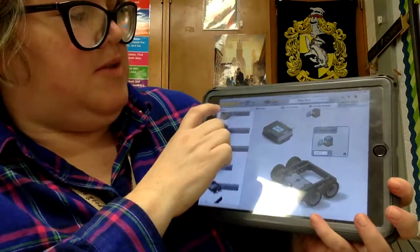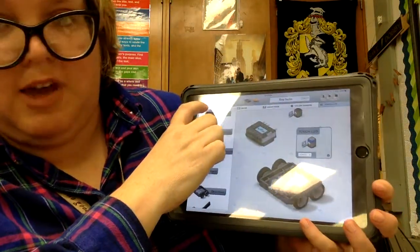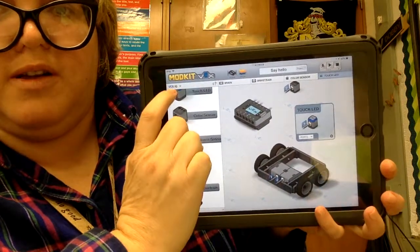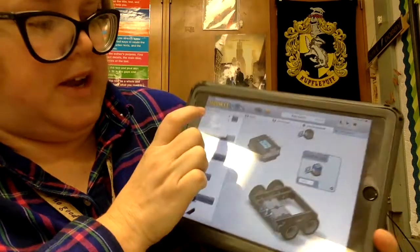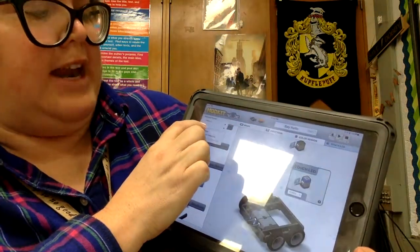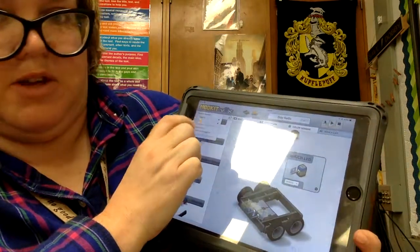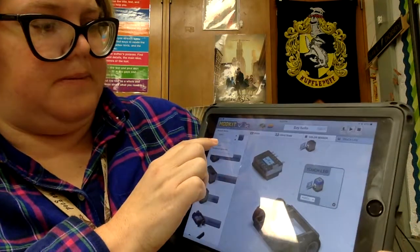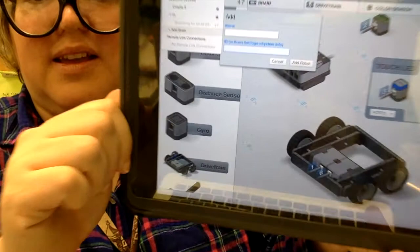So what we do here is we click VEX IQ up in the top left corner and we're going to click add brain. You want to add a brain.